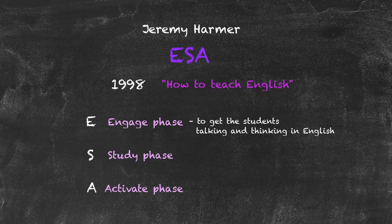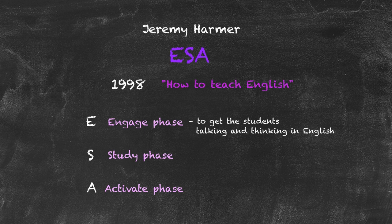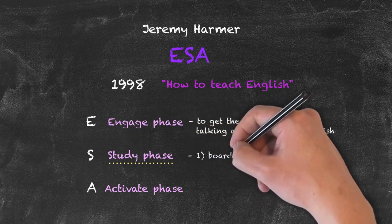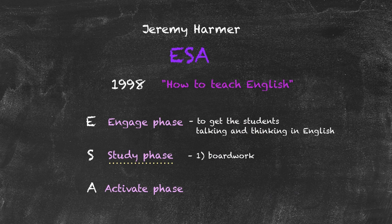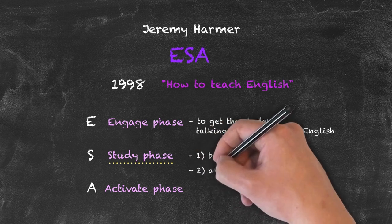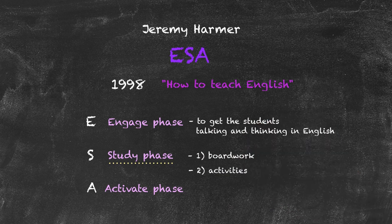Going back to the idea of the affective filter — when students are relaxed and ready, their chances of learning improve. The engage phase, usually done through communicative games, relaxes students and gets them involved. Once completed, we move into the study phase, which has two parts. The first is board work — where the actual teaching takes place. Once that's done, we check that students understand what they've been taught by asking them to complete a series of activities targeted towards the teaching component.